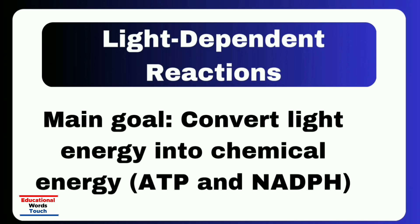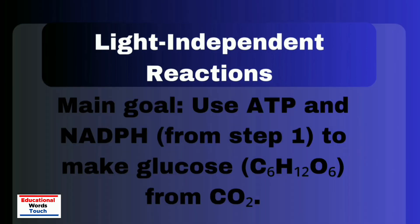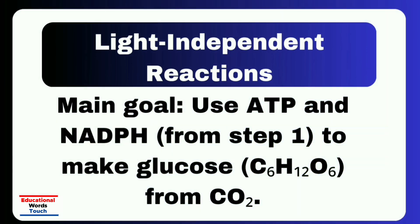The light independent reaction, also called the Calvin cycle, is the second stage of photosynthesis and it takes place in the stroma of the chloroplast. This stage does not require light directly. Instead, it uses the ATP and NADPH produced during the light dependent reactions.